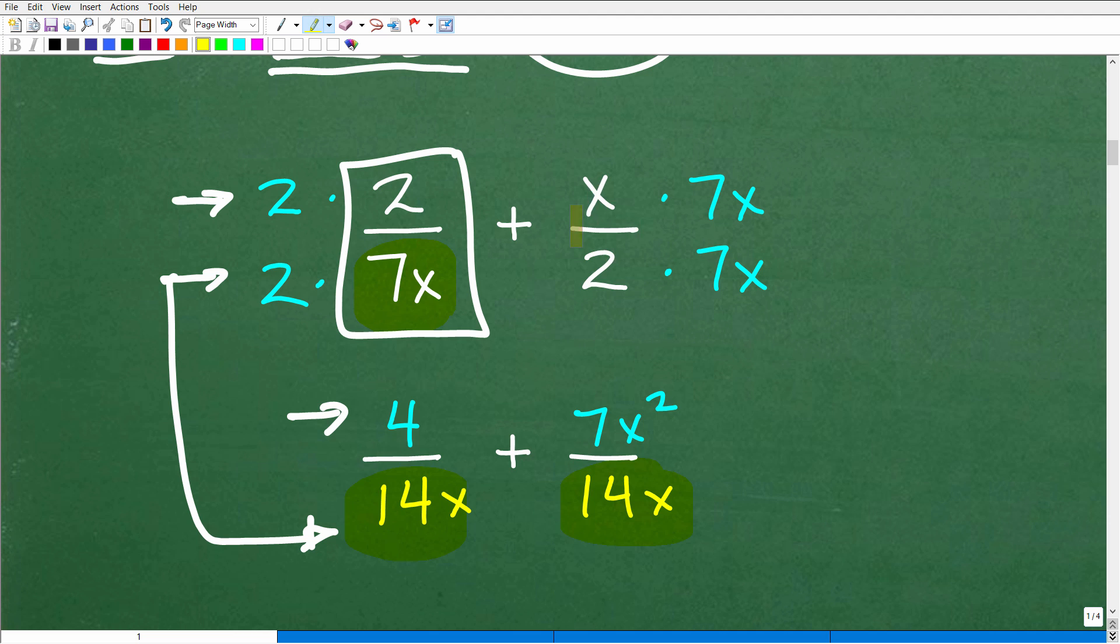Okay. So let's go ahead and work on this other rational expression or fraction. We have X over two. So how do I change a two into a 14 X easy? We're just going to multiply it by a seven X. So seven X times two gives us that 14 X. But again, we're going to have to multiply that seven X times this X up in the numerator. So that's going to be seven X squared. Okay. So at this point, we basically rewrote both of these fractions, these rational expressions, and now they have common denominators, which is of course 14 X.